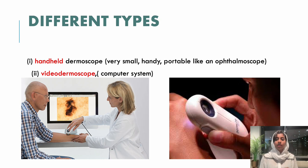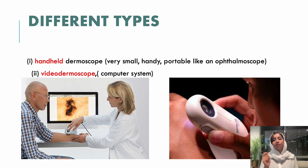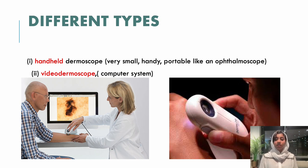Coming to the types of dermoscope: one is the handheld, which you can see on the right-hand side, and the other is the computer-based video dermoscope on your left-hand side. The handheld dermoscope is very small, handy, and portable, just like an ophthalmoscope. Whereas the computer-based video dermoscope is connected to a computer with a USB and gives a wider, bigger image. The magnification of the dermoscope can range from 2x, 10x, 40x, and it can go even up to 100x.